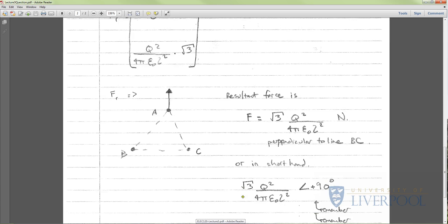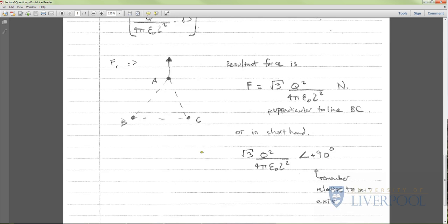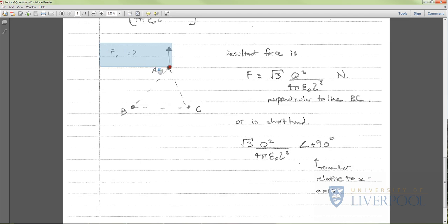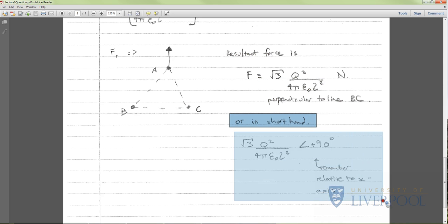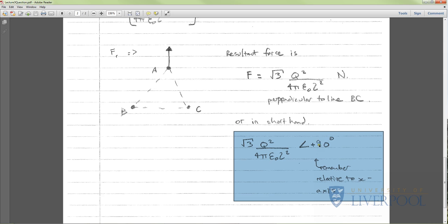Here's my little phaser diagram. Here's A and we can see A is going to go away in that direction. The resultant force is, this is your official answer, F equals root 3 Q² over 4πε₀L² Newtons, and it's perpendicular to line BC. Or in shorthand phaser notation, I can write the magnitude at an angle of plus 90 degrees. Remember this is relative to the x-axis and we go anti-clockwise.